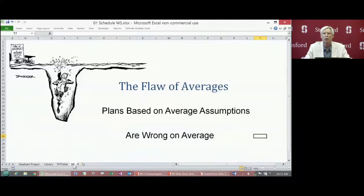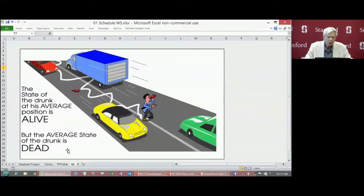So, let me give you another more sobering example. Consider a drunk wandering back and forth on a busy highway. His average position is the centerline. The state of the drunk at his average position is alive, but on average, he's dead. Again, not close enough even for government work.